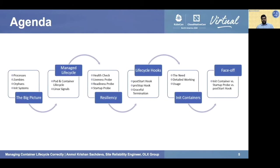Today's talk is divided into six segments. The first is about Unix processes and init systems, including zombies and orphans. The next section covers managed lifecycle — pod and container lifecycle along with Linux signal handling. The third section covers resiliency and high availability through health checks and probes, specifically liveness, readiness, and startup probes. The fourth segment covers lifecycle hooks and graceful termination. The fifth section covers init containers and their detailed working. The sixth segment compares init containers, startup probes, and post-start hooks.